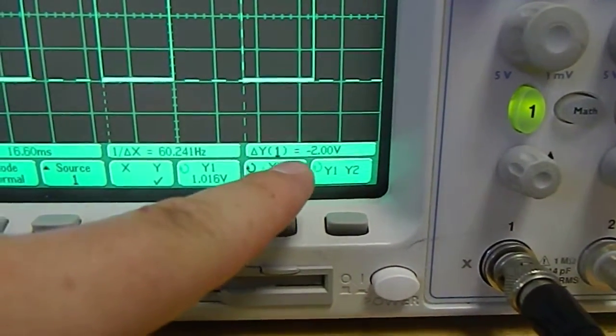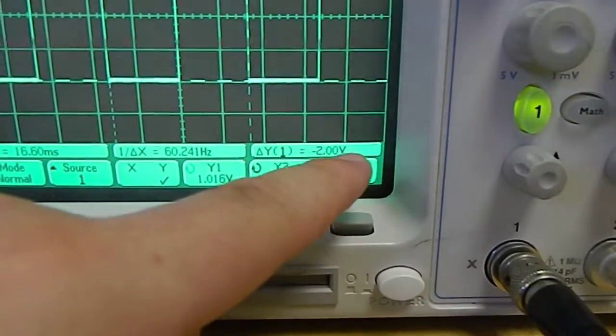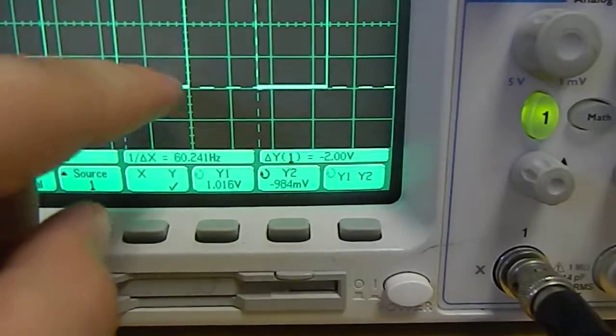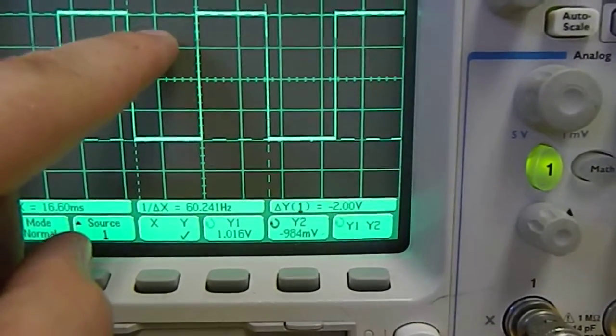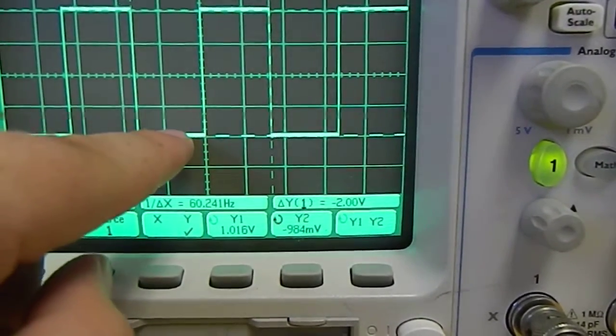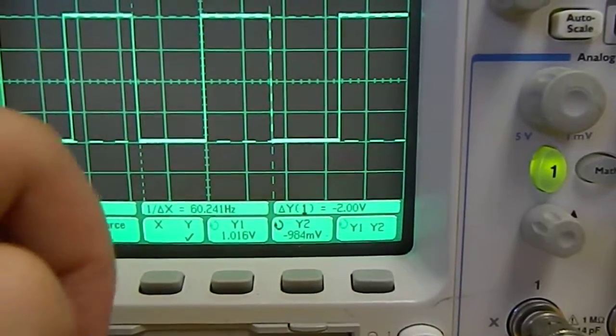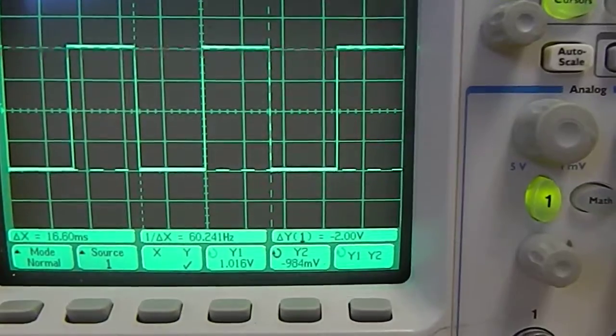And you can see now that in the lower right-hand corner, it says delta Y1, and it says negative 2 volts. All right? So that's the distance from the first one to the second one, the first one being located at plus 1 volts, and the second at negative 1 volts. So that, their addition is negative 2 volts.